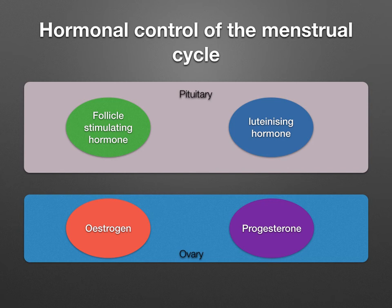The cycle begins with the production by the hypothalamus of a hormone called gonadotrophin-releasing hormone, GnRH. This stimulates the anterior lobe of the pituitary gland to produce its hormonal secretions. The two hormones produced by the anterior lobe of the pituitary gland are known as gonadotrophic stimulating hormones: follicle-stimulating hormone, FSH, and luteinizing hormone, LH.